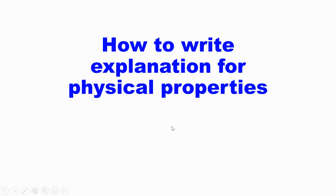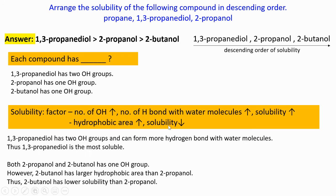How to write explanation for physical properties of organic compounds. Let's look at the question. The question says arrange the solubility of the following compound in descending order. Descending order means from high to low.